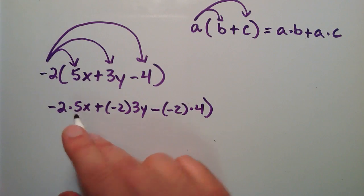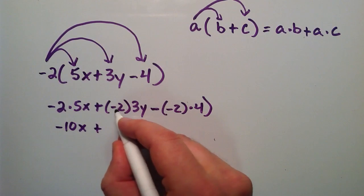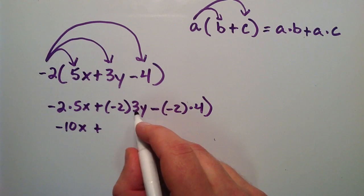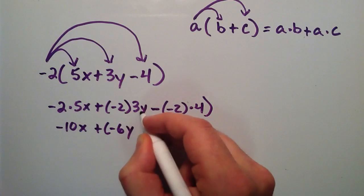So then we just simplify this right here. So a negative 2 times a positive 5 is a negative 10, and then we have the X. And then we're adding that to a negative 2 times a positive 3. That equals negative 6. And then we'll just put the Y down there.